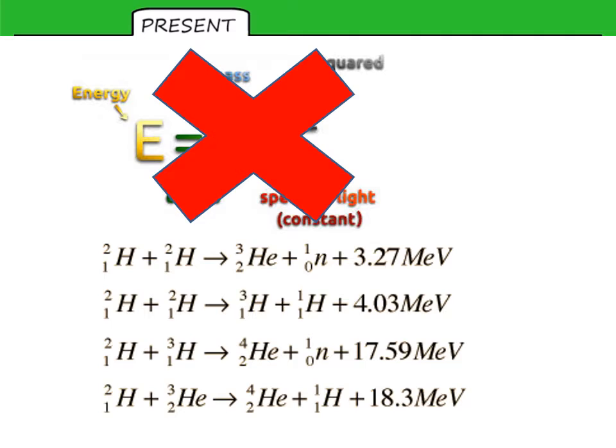And that conversion factor is done with E equals MC squared. The same is true for nuclear fission. Again, the products are slightly lighter than the reactants. It's the difference in mass, a tiny difference in mass accounts for a massive amount of energy.